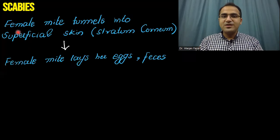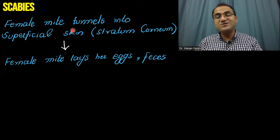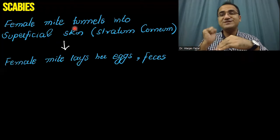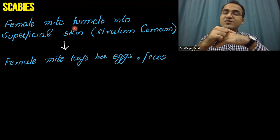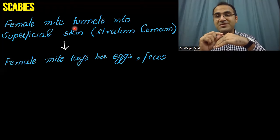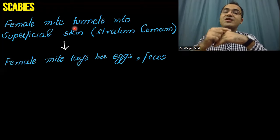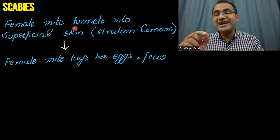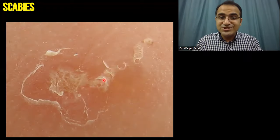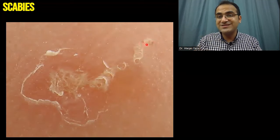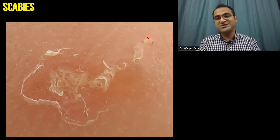The female mite of Sarcoptes scabiei tunnels into the superficial layer of the skin called the stratum corneum. It lies there and lays its eggs and feces. This is a picture showing the tunneling of Sarcoptes scabiei — you can see the tunnel it has formed, and the dark organism present is Sarcoptes scabiei.